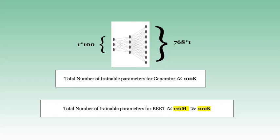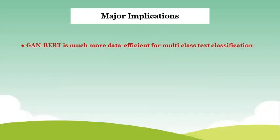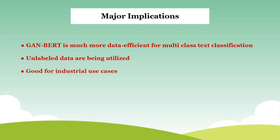So the additional complexity cost can be said to be negligible. Another important point to note is that the generator is excluded after training the whole model, so during inference no computational cost is required for the generator. To summarize the key use cases for GANBERT: it is much more efficient for multi-class text classification when fewer labeled data are available; unlabeled data can be utilized to improve model learning; it is very good for industrial use cases where people focus more on model performance rather than data itself; and it does not require any additional computation cost during inference.